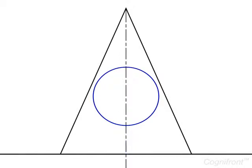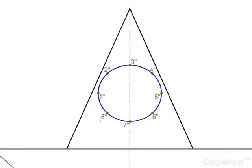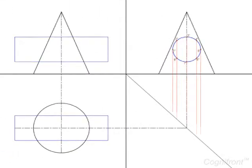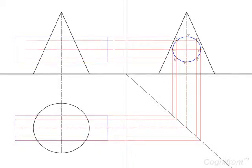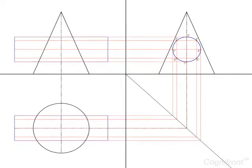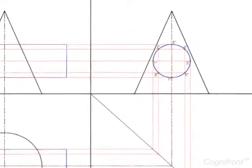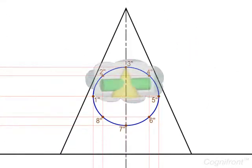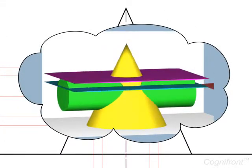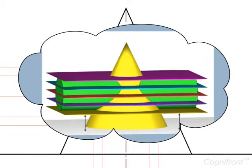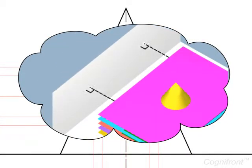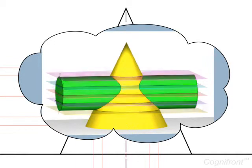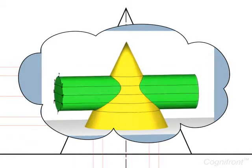Now we will divide the circle in the side view of the cylinder into eight equal parts and project lines from these points onto the top view and front view. To obtain the lines of intersection, we shall assume that a number of horizontal planes parallel to HP and perpendicular to VP are passing through the intersecting cylinder.